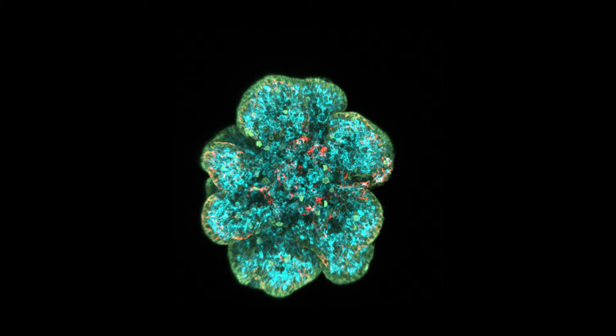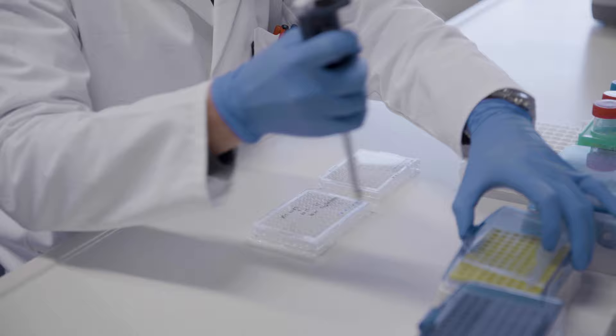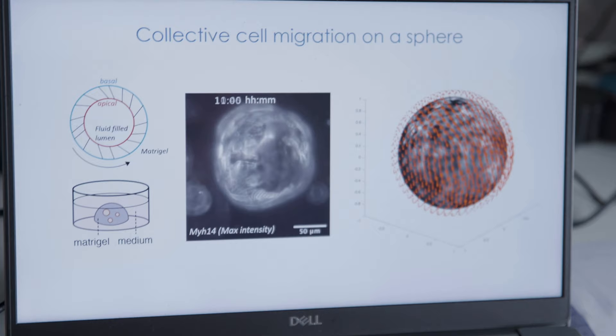The MPICBG is a unique place because we have the organoids, the model organisms, and a strong core of theorists, including mathematicians, physicists, and computer scientists. These people in collaboration can help us be more quantitative, but also develop theoretical models whereby we can test a lot of parameters and compare what we observe in real life with what we observe when we just simulate it. That gives us a lot of power.